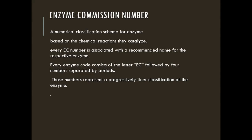Every enzyme code starts with the letters EC, followed by four numbers separated by periods. Those numbers represent a progressively finer classification, indicating what type of reaction that enzyme catalyzes.